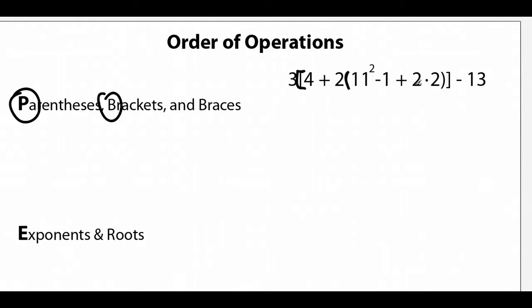So it's a problem within a problem. And so we come here and say we have 11 squared minus 1 plus 2 times 2. So we do order of operations with that. So we start with our exponents and we do 11 times 11, which we know to be 121.